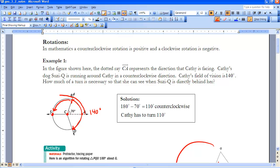We know from A to S is 180 degrees, because that makes a semicircle. If 70 of those degrees are in Cathy's field of vision to the left, or counterclockwise, then the rest of the way that she would need to turn would be 180 minus 70, so 110 degrees.